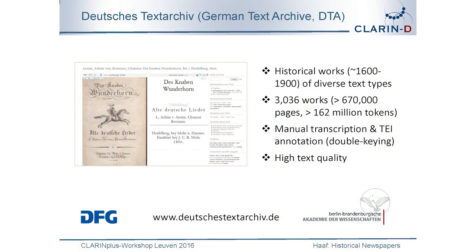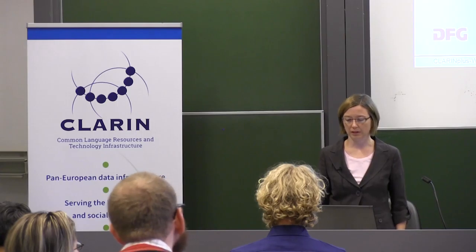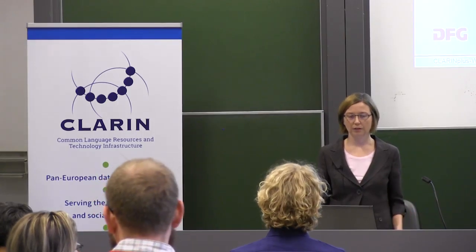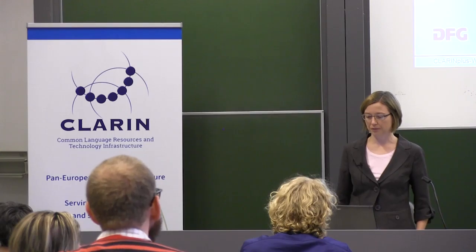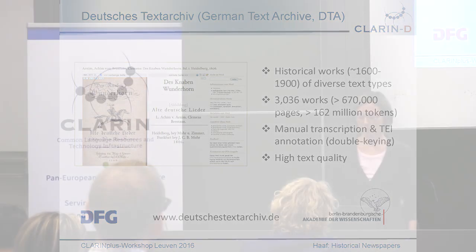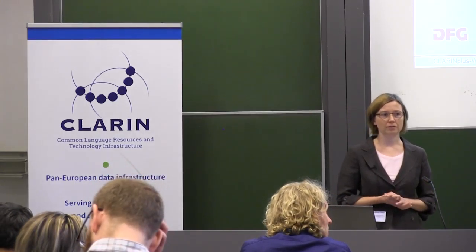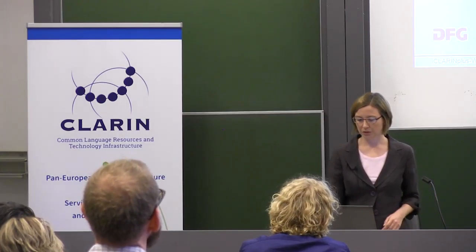Currently we have gathered about 3,000 works which were all manually transcribed. The DTA core corpus is actually about 2,000 works, and then there are many works we gathered through curation. They were manually transcribed and annotated using the TEI annotation tag set and a special format we developed. Transcription was performed with the double key method, so we tried to get really high text quality.